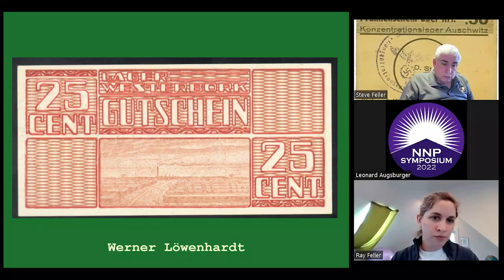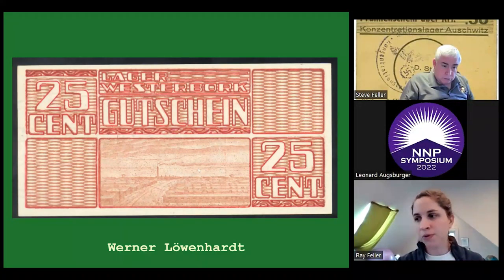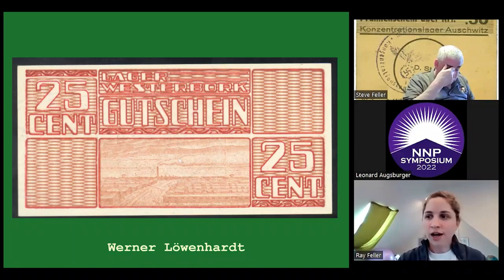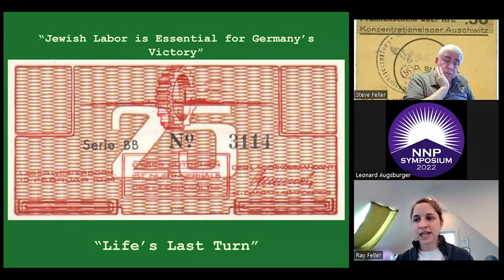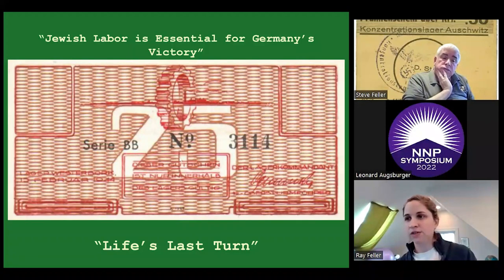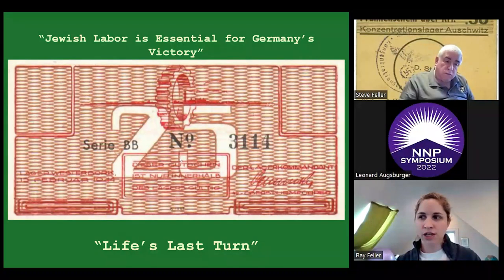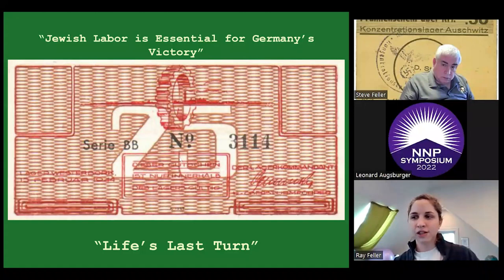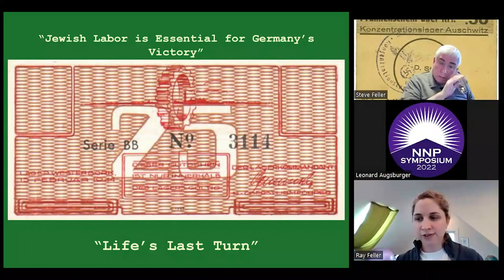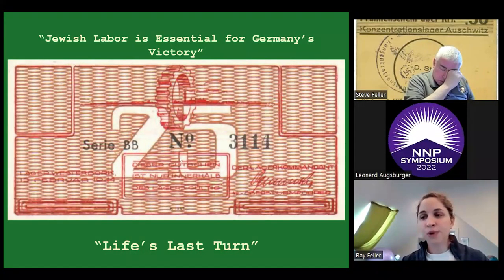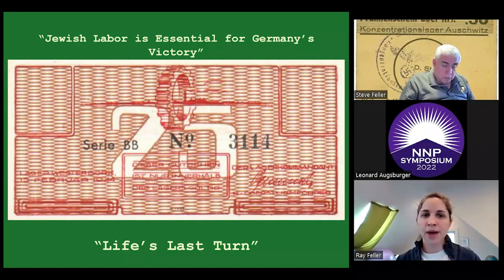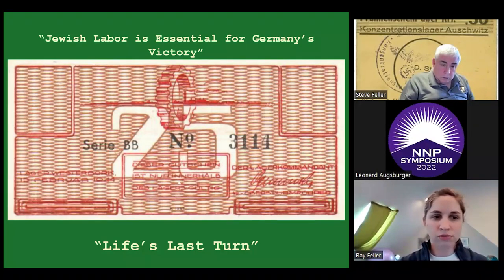This note from Westerbork was designed to have an industrial look. Obviously smokestacks are a very frightening image — when you think about Auschwitz — but this is actually the camp laundromat. These notes were designed by a man named Werner Leuvenhart. On the back was a gear, and the goal from the Nazi perspective was to say 'Jewish labor is essential for Germany's victory' — that people should work to help the German war effort. The Jews, however, referred to this as 'life's last turn.' There was actually a lot of pressure not to work in Westerbork — it's better to sacrifice your own life and get put on the transit list than to contribute to German success.